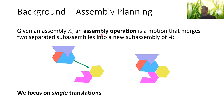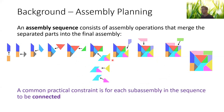Given an assembly, an assembly operation takes two sub-assemblies that are initially separated and is a motion that merges them into a new sub-assembly. Motion can consist of multiple translations and rotations in general, but we're just focused on a single translation, where we take a sub-assembly and move it using one step towards the other. An assembly sequence consists of assembly operations that merge the separated parts into the final assembly. Here we have an example of an assembly sequence for this assembly.